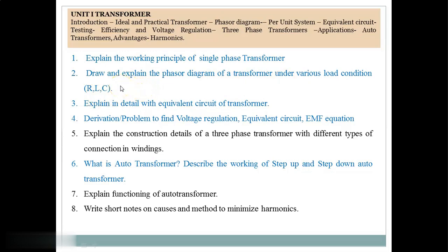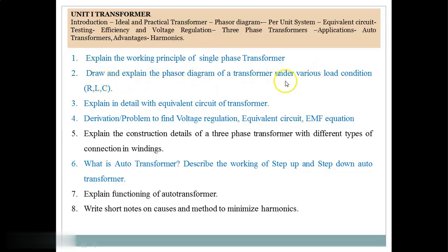The same question may be asked in another manner like: Draw and explain the phasor diagram of a transformer under UPF condition. UPF means Unity Power Factor condition, that is for R load. For lagging power factor condition — inductive load. For leading power factor condition — capacitive load. The question may also be asked as: Draw and explain the phasor diagram of a transformer under various power factor conditions. Also: Explain in detail the equivalent circuit of a transformer.